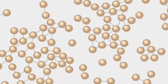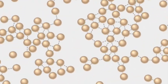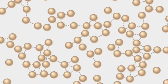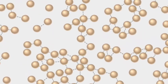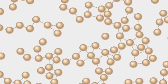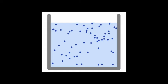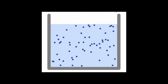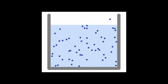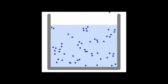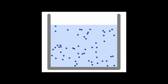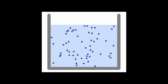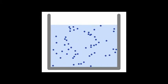This is an average, which means that some molecules will be moving faster than average and some slower. There will always be a few molecules that have enough kinetic energy to overcome the attractive forces in a solid or liquid and escape into the gas phase.